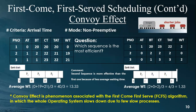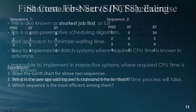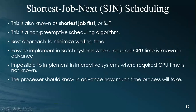Shortest Job Next, or Shortest Job First, is a non-preemptive scheduling algorithm. Non-preemptive means that once the CPU is allocated, it will not be taken back until the process is finished. If you give the CPU to any process, it will not take it back. This is one of the best approaches to minimize waiting time and is easy to implement in batch systems.